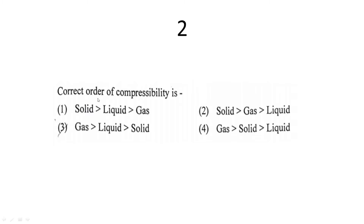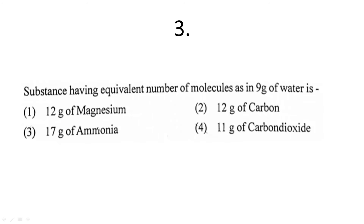The second question: the correct order of compressibility of solid, liquid, and gas. Compressibility is highest for gas, then liquid, then solid — decreasing order. Hence option 3 is correct. The third question: which substance has an equivalent number of molecules as in 9 grams of water?